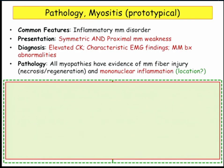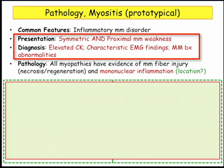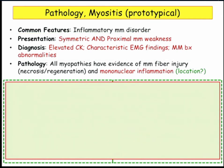For both dermatomyositis and polymyositis: inflammatory muscle disorders, symmetric and proximal muscle weakness, high CK, characteristic EMG. All myopathies basically have necrosis of muscle and mononuclear inflammation. The way the diseases distinguish themselves is location — where is that inflammatory process taking place? That's the basic test question on this topic.